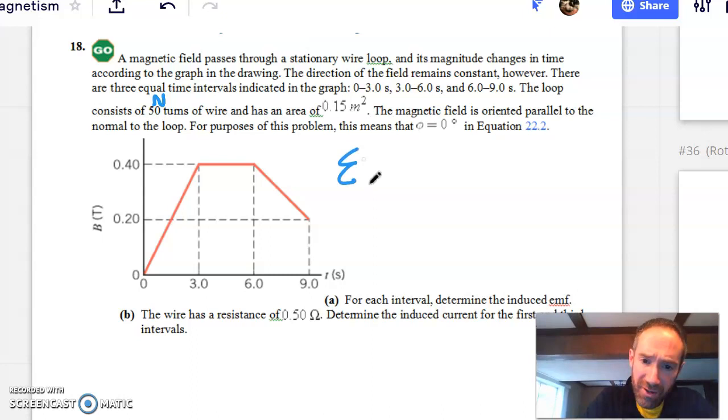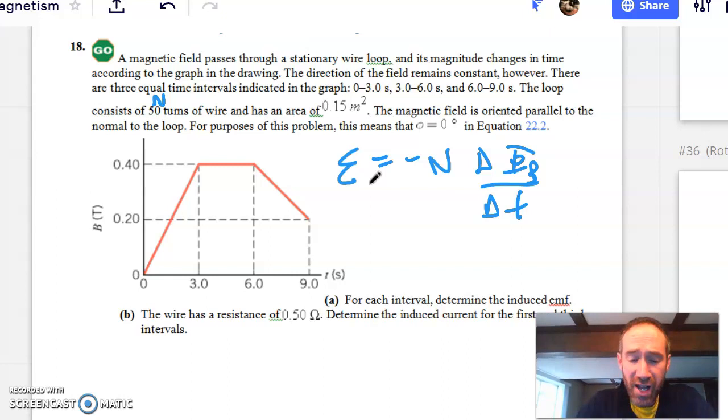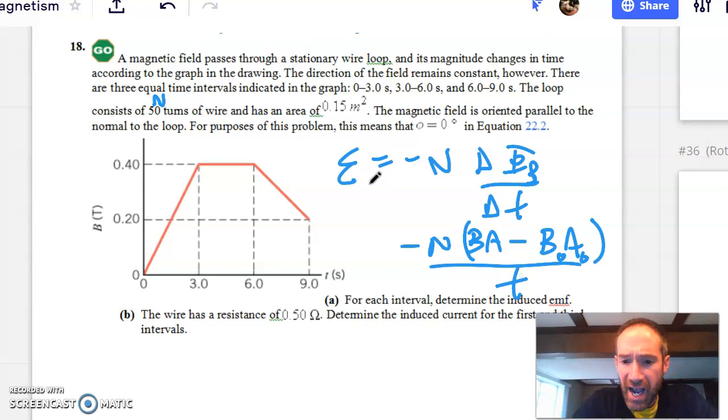So as I know, the induced EMF is the opposite of the number of turns of wire times the rate of change of the flux. And so here, the rate of change of the flux is the N times the flux final, B dot A final, minus the B dot A initial, divided by the time.